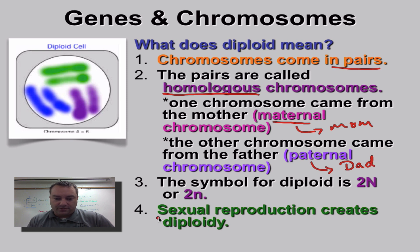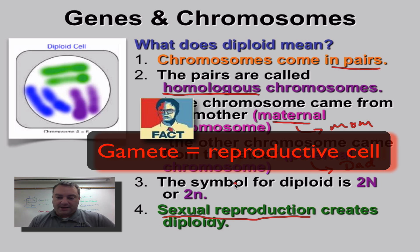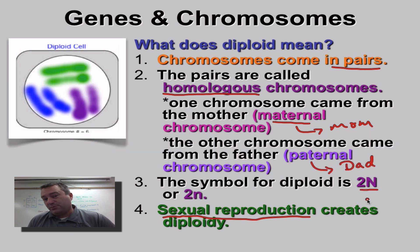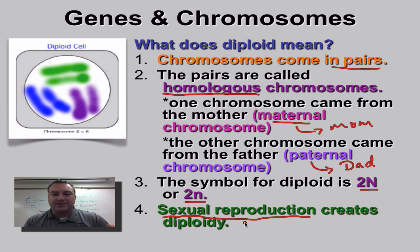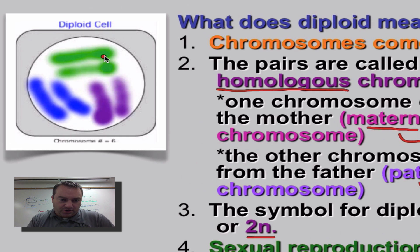Homologous chromosomes come from sexual reproduction, where a male gamete joins with a female gamete — that's how you get your two. The symbol for diploid is 2n. The textbook uses a capital letter, but a lowercase letter is fine too — it doesn't matter which one you use.